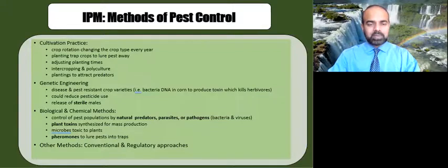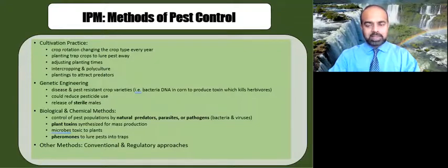Other cultivation practices include rotating crops every year, planting trap crops to lure pests away, adjusting planting times, intercropping, and polyculture.